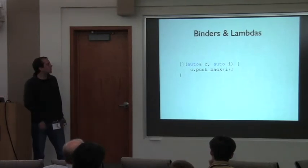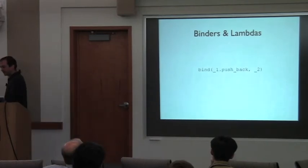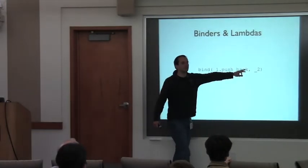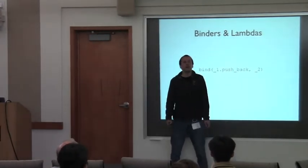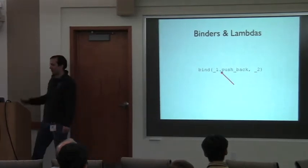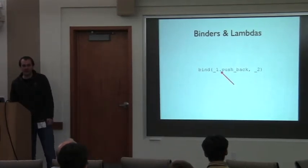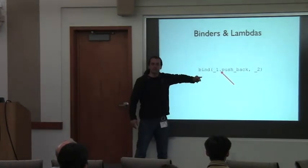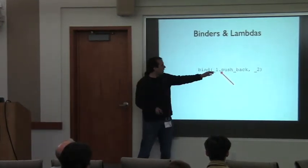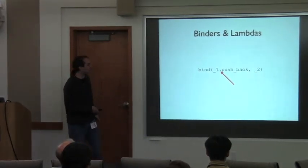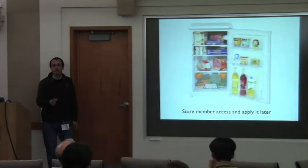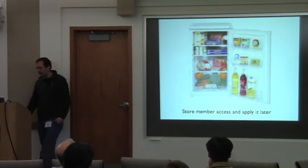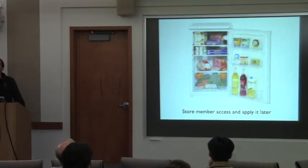In this bind case we can't just say here's a member access and push it to another object, because at the point of defining the placeholder we don't know the type — I can put a list, a deque, a vector, any container with push_back. So I want to store the member access and only when the bind expression gets called, then access the member inside. One case is immediate forwarding to another object; the other is delayed.